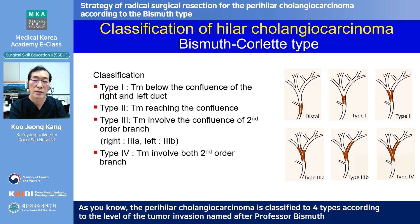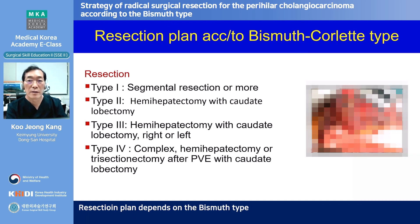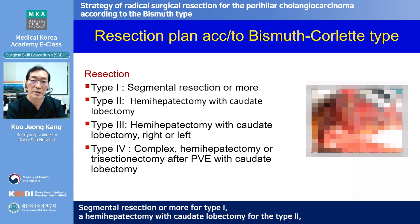As you know, perihilar cholangiocarcinoma is classified into four types according to the level of tumor invasion, named after Professor Bismuth. The resection plan depends on the Bismuth type — segmental resection or more for type 1.